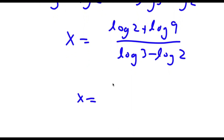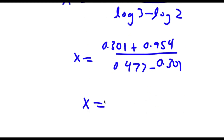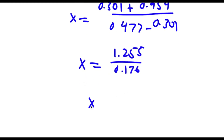Now substituting decimal values: log 2 equals 0.301, log 9 equals 0.954. In the denominator, log 3 equals 0.477 minus log 2 which is 0.301. So this is equal to 1.255 over 0.176, which equals approximately 7.13. So this is my answer.